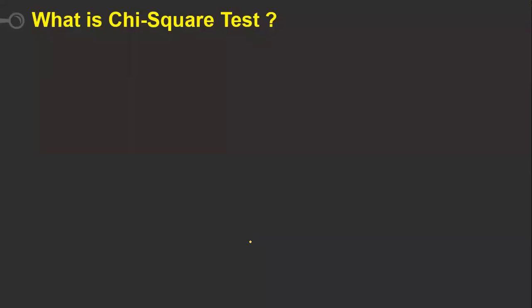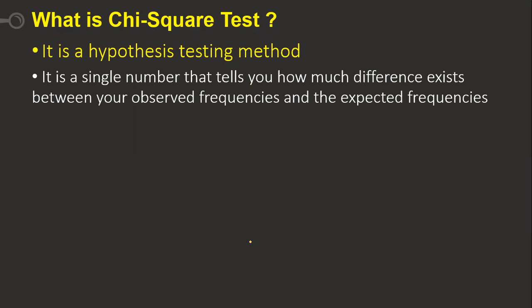First, let's understand what a chi-square test is. In simple terms, it is a hypothesis testing method. It produces a single number that tells you how much difference exists between your observed frequency and your expected frequency.